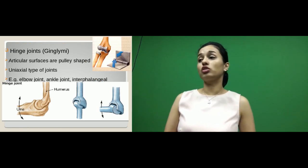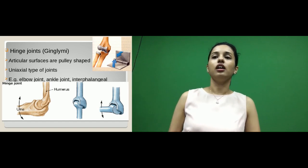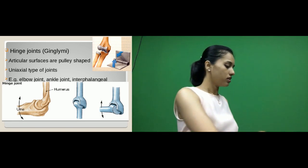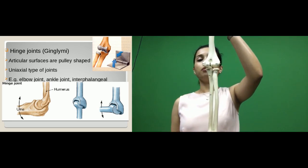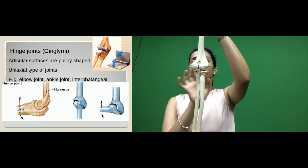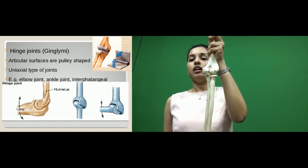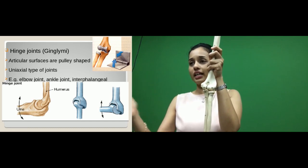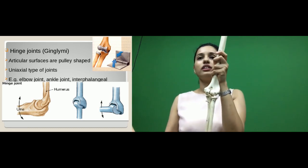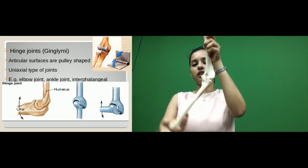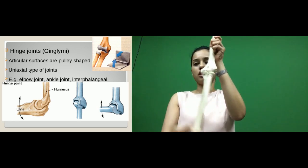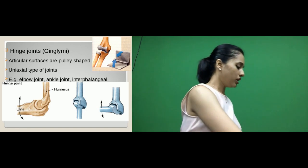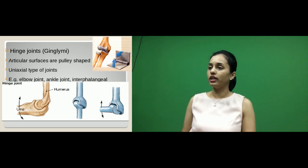The next is hinge type. It is called a hinge joint because, similar to a door hinge that allows opening and closing, this joint works similarly. A very good example is the elbow joint, between the lower end of the humerus and the upper ends of the radius and ulna. The movement is pulley-shaped and occurs at one axis — flexion and extension — making this a uniaxial type of joint.